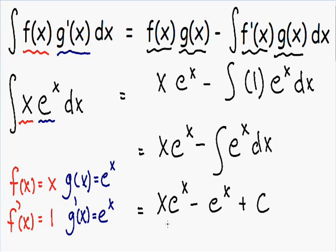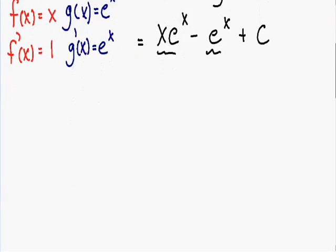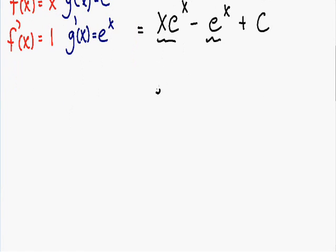If your teacher is really picky you can simplify this even further. Both of these terms have an e to the x in common. So you can factor out an e to the x. So let's do that. If you factor out e to the x, inside the parentheses we're left with x minus 1. And once again you can't forget about your plus c. So this is the solution to our example.